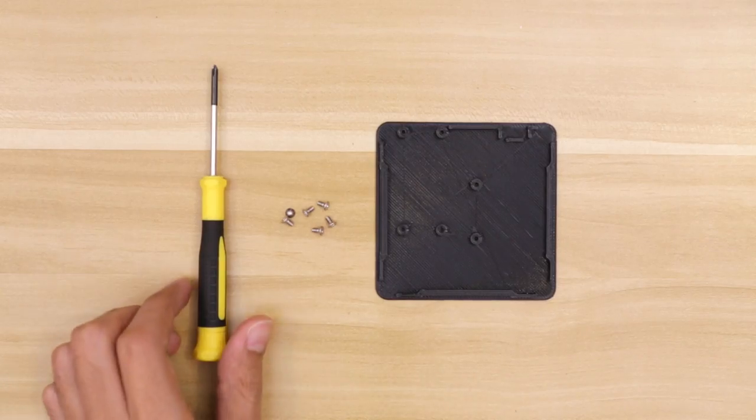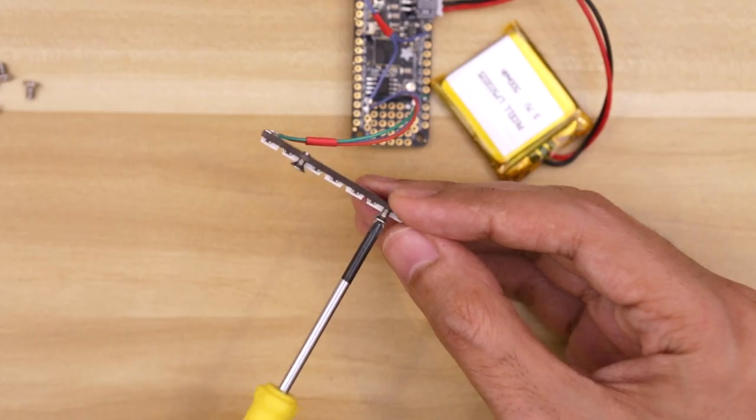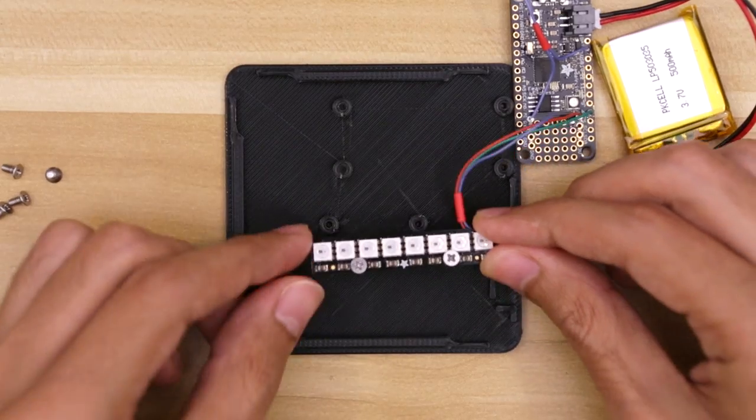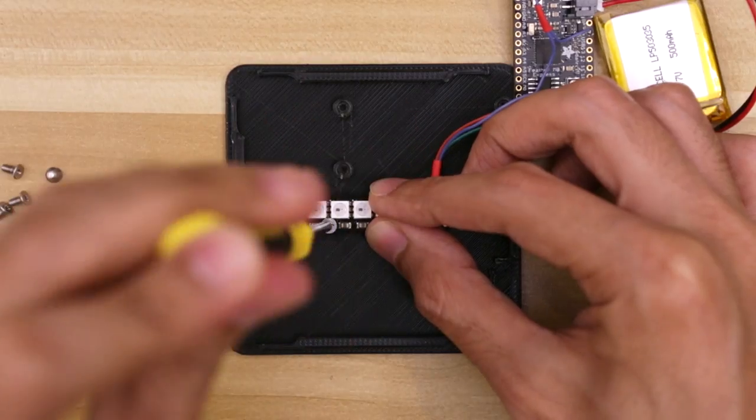Now it's assembly time. To secure the PCBs to the bottom cover, I'm using some short M2.5 sized machine screws. Starting with the NeoPixel stick, I'll fasten two of the screws into the PCB. Then position it over the two standoffs in the center and hold it down while fastening until fully tightened.